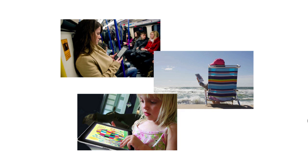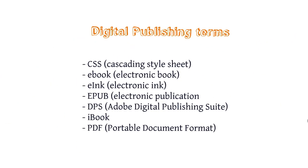I'd rather concentrate on the terms that are used in digital publishing. These are things you should know about before you do anything in digital publishing because you will meet these terms a lot. So, first of all, CSS, which is the Cascading Style Sheet — this is a coding language used to describe the look and feel of HTML content.